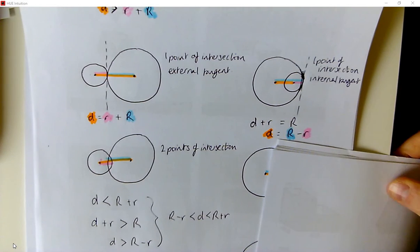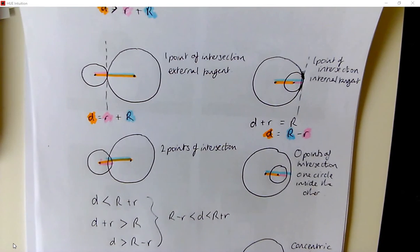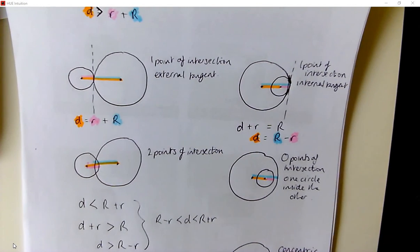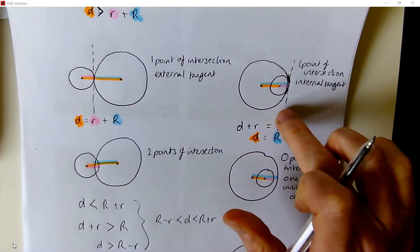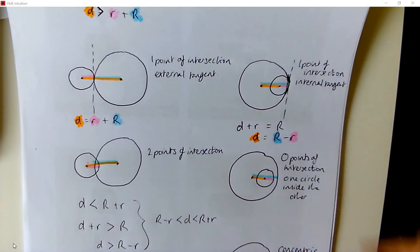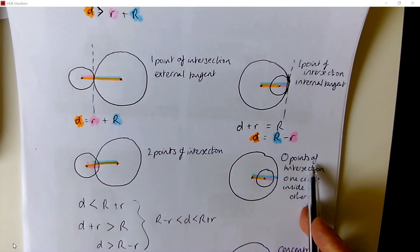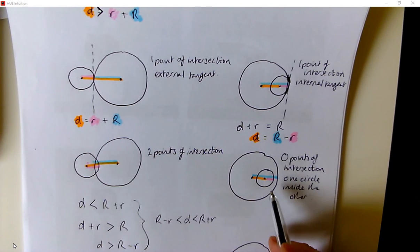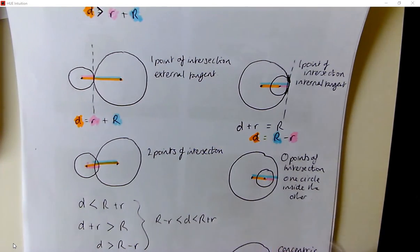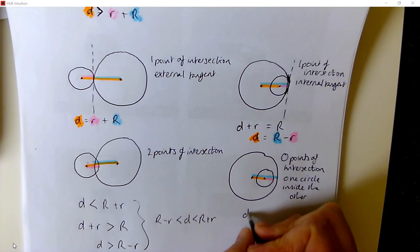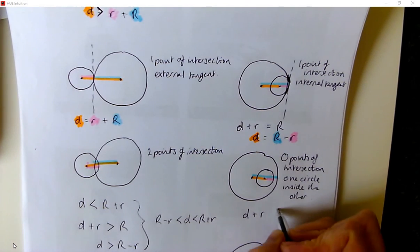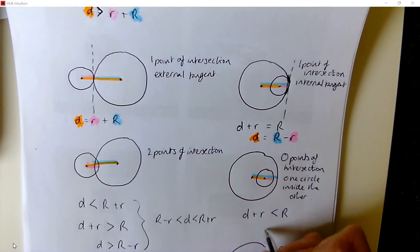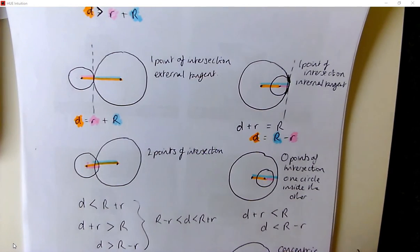Now let's go a bit further. We're going to consider the little circle just inside the big circle — touching with one point of intersection — and then move it so there are no points of intersection but the little circle is inside the big circle. Then the distance between the two centres plus the little radius will be less than the big radius, or equivalently, the distance is less than the big radius minus the little radius.